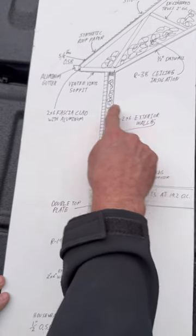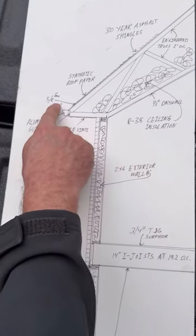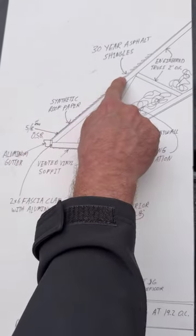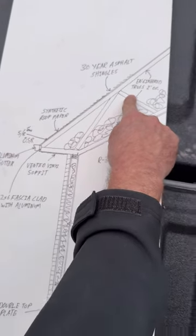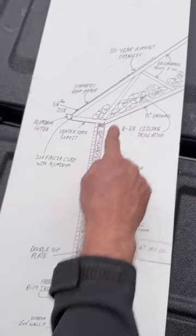There will be vented vinyl soffit under the overhangs, two by six fascia, aluminum gutter, five eighths roof sheathing, synthetic roof paper, 30 year asphalt shingles, trusses two foot on center, R38 ceiling insulation, and half inch drywall on the ceilings and walls.